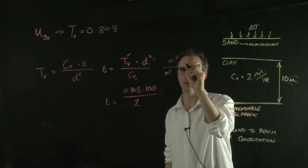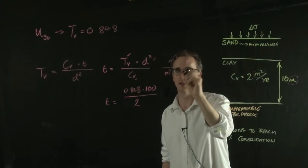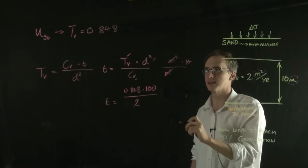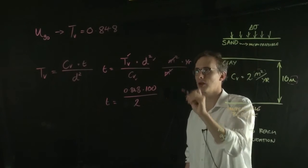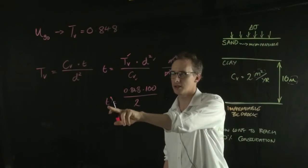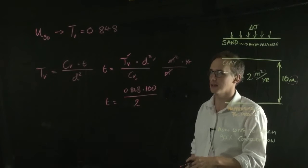So you have meters squared on the bottom and you multiply that by a year, and you can see that the two meters squared cancel out, or square meters cancel out, and you're left with a value in years, so your time value here is in years.